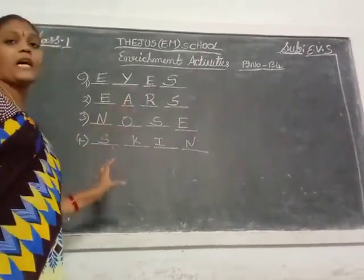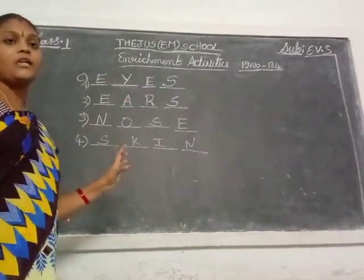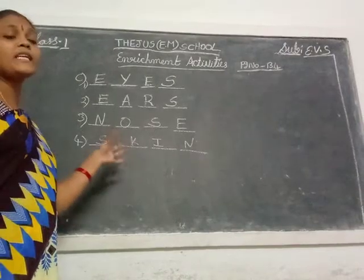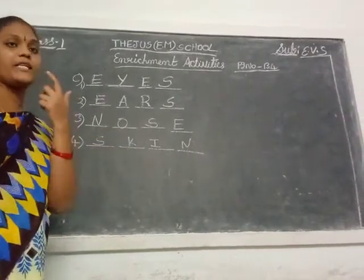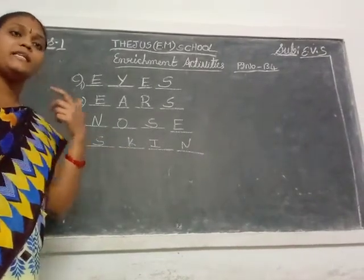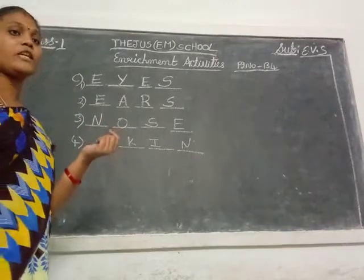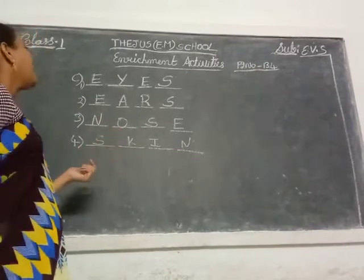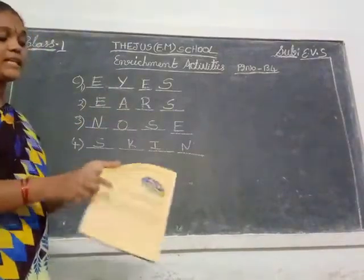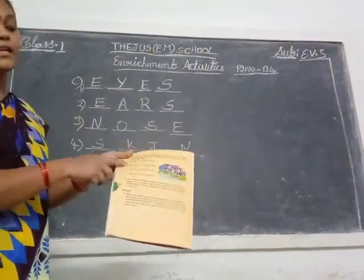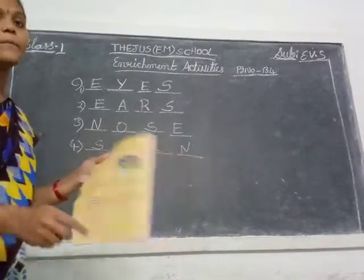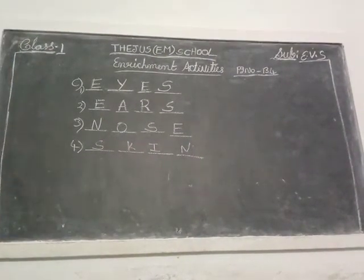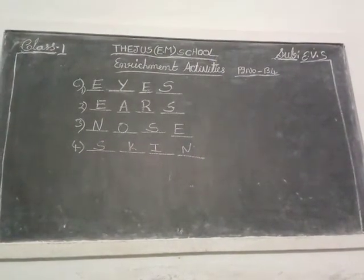These are the sense organs. One sense organ is missing here — what is that? Tongue. Tongue can taste. Okay children, take your pencils and complete the missing letters in these blanks. Okay? Thank you.